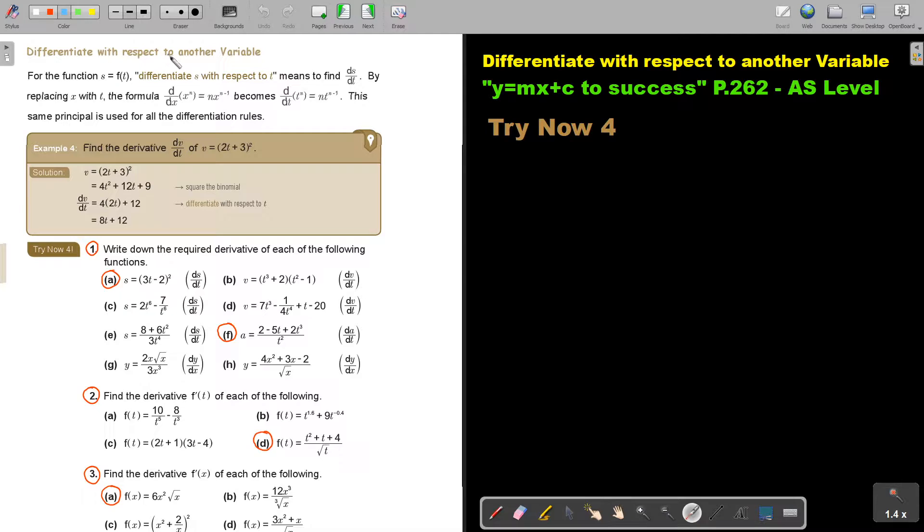Differentiate with respect to another variable. For the function, and now look, in the place of y there's an s and in the place of x there's a t. Differentiate s with respect to t, so not differentiate y with respect to x, but we still use that one and then with respect to this one. Means to find ds, so we still put that on top and that one at the bottom, by dt.